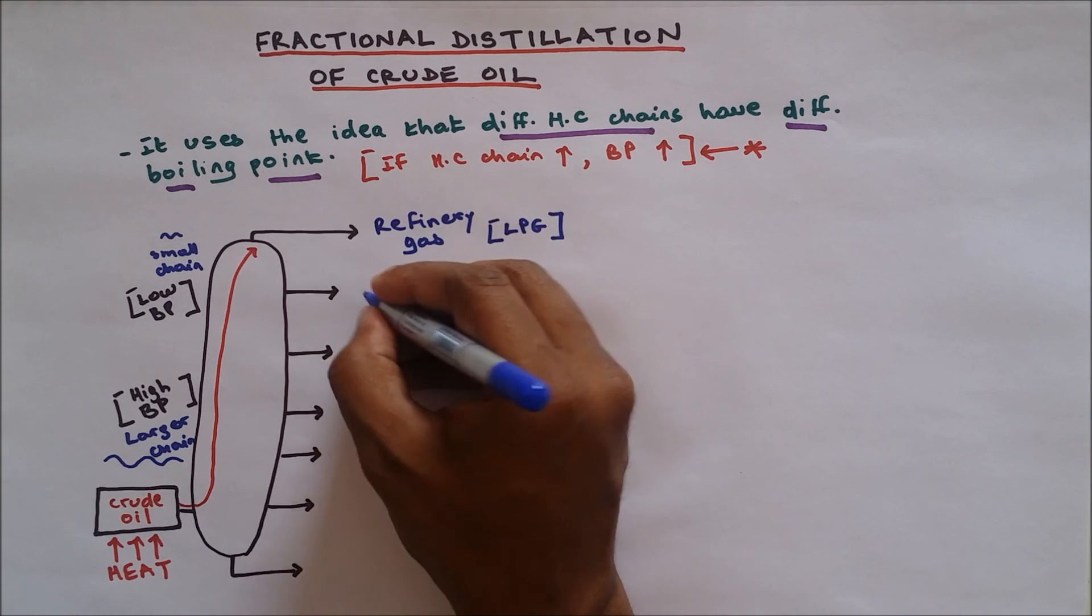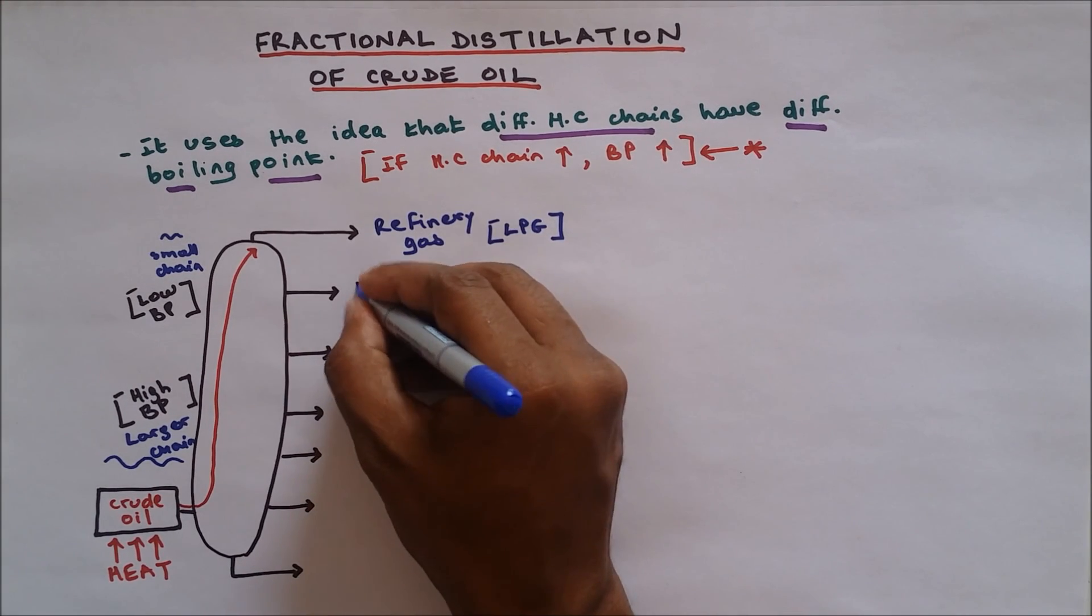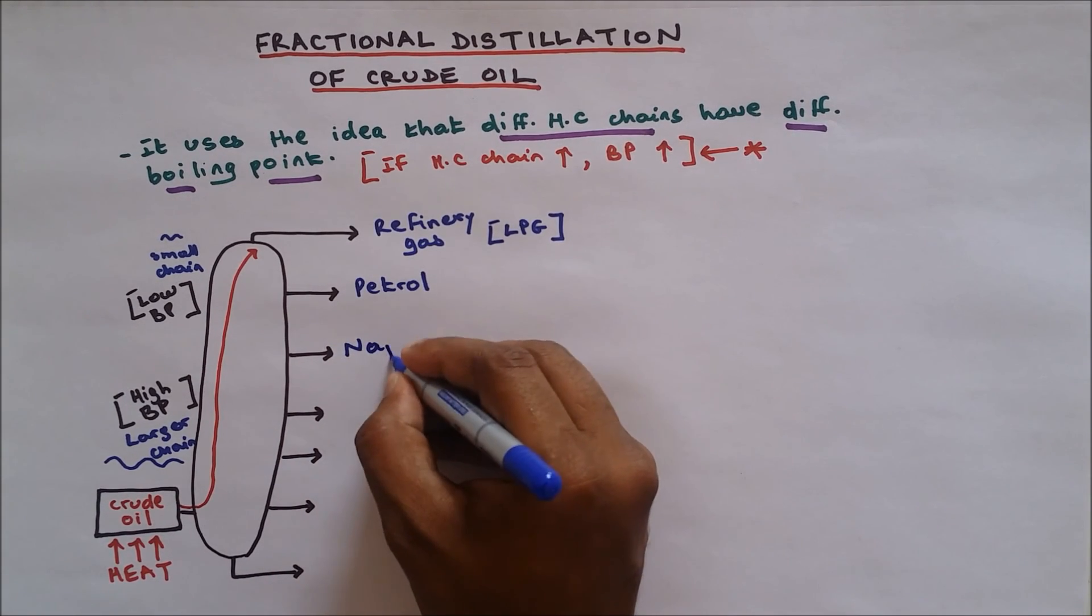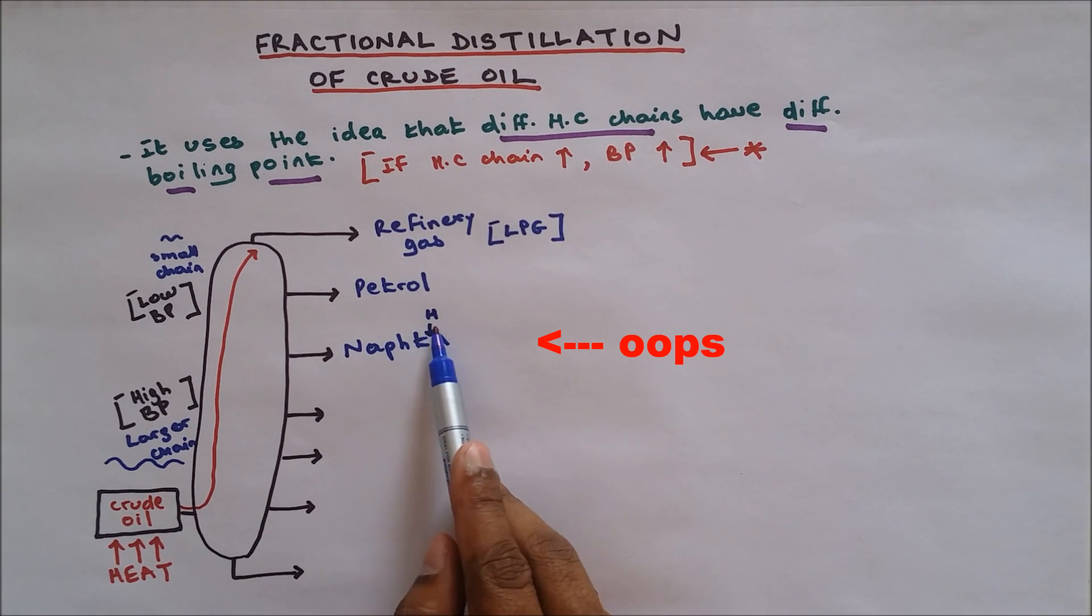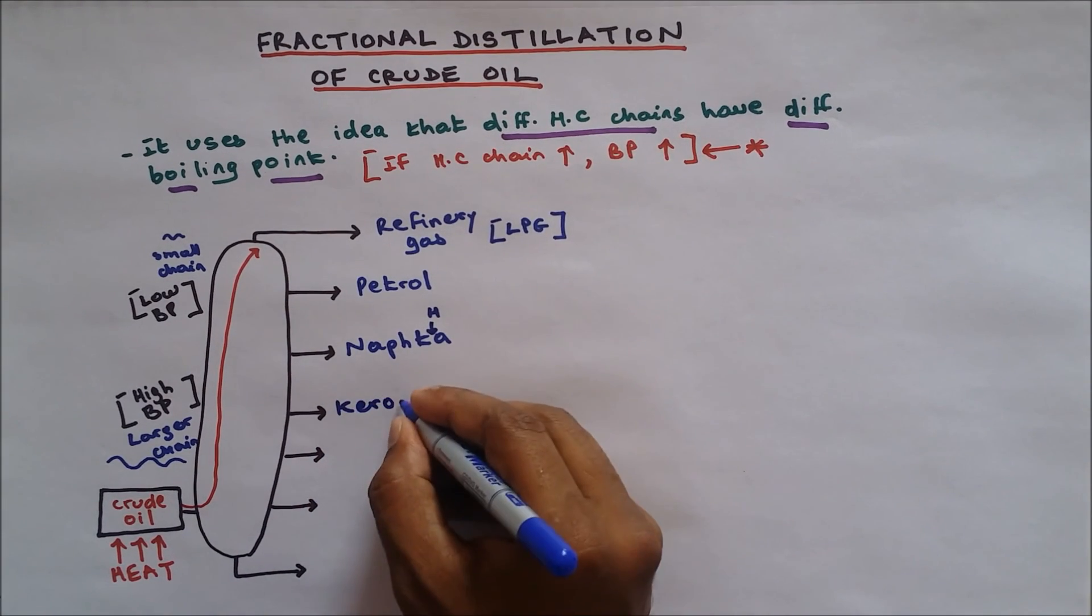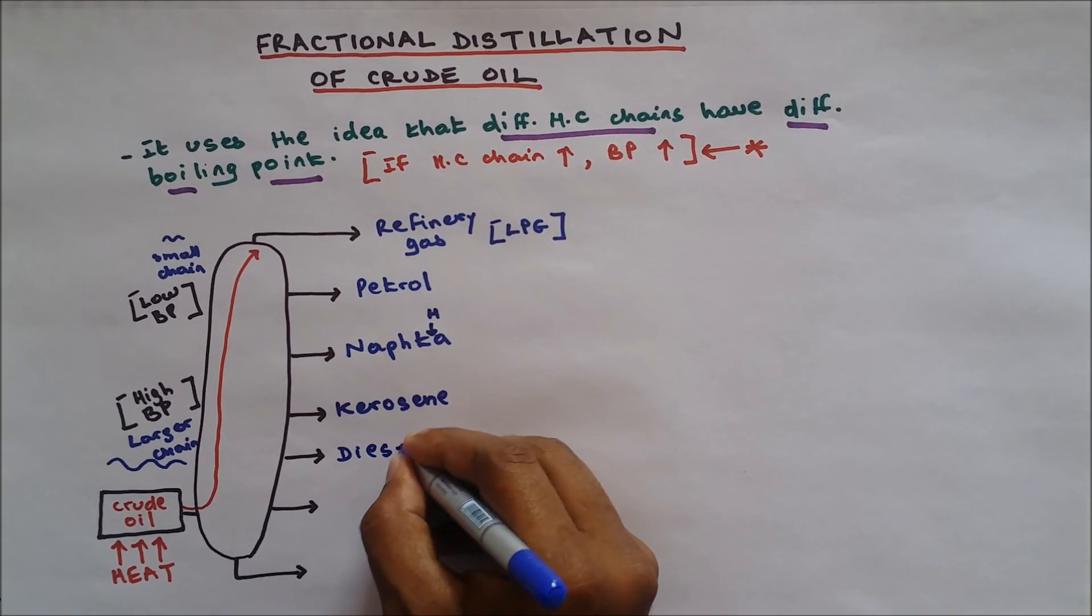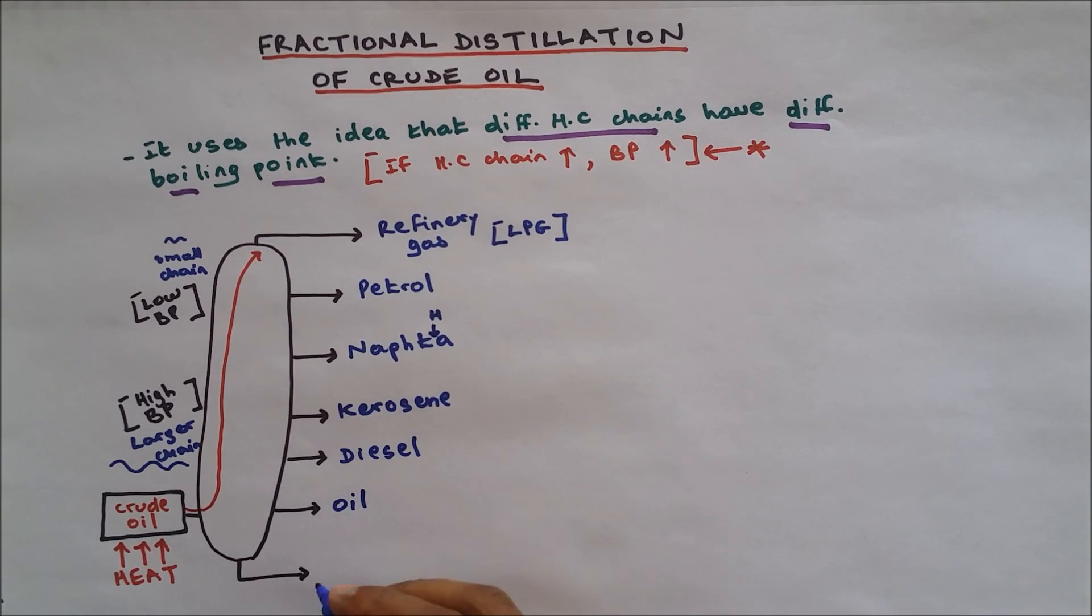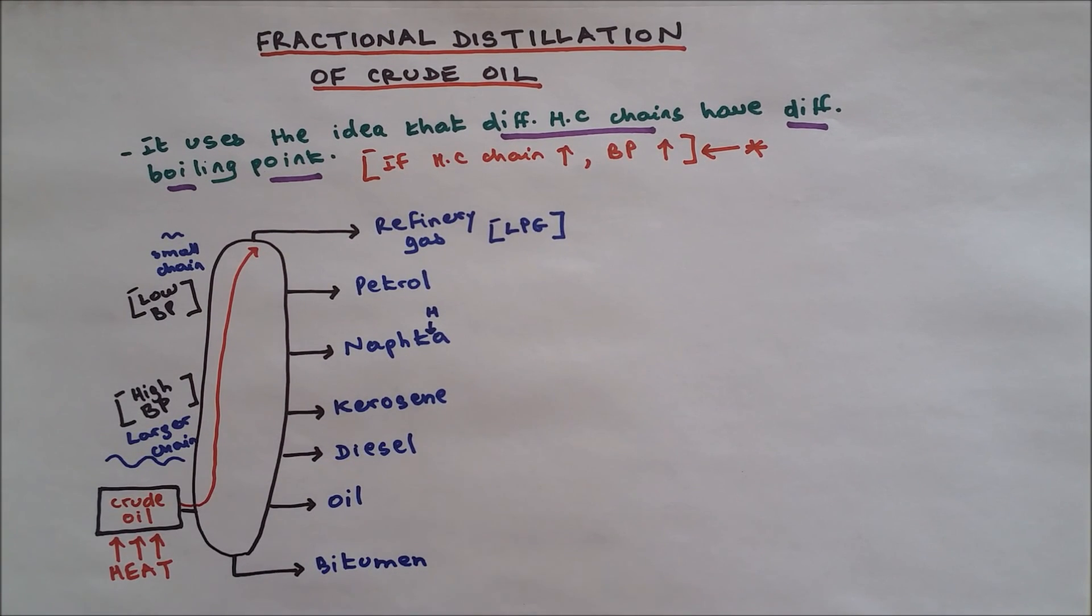The second category, the second smallest chain, is petrol. And then we have naphtha. Then we have kerosene, and then diesel, and then oil. And the last one at the bottom category is bitumen. So bitumen has the longest chain in the fractional distillation.